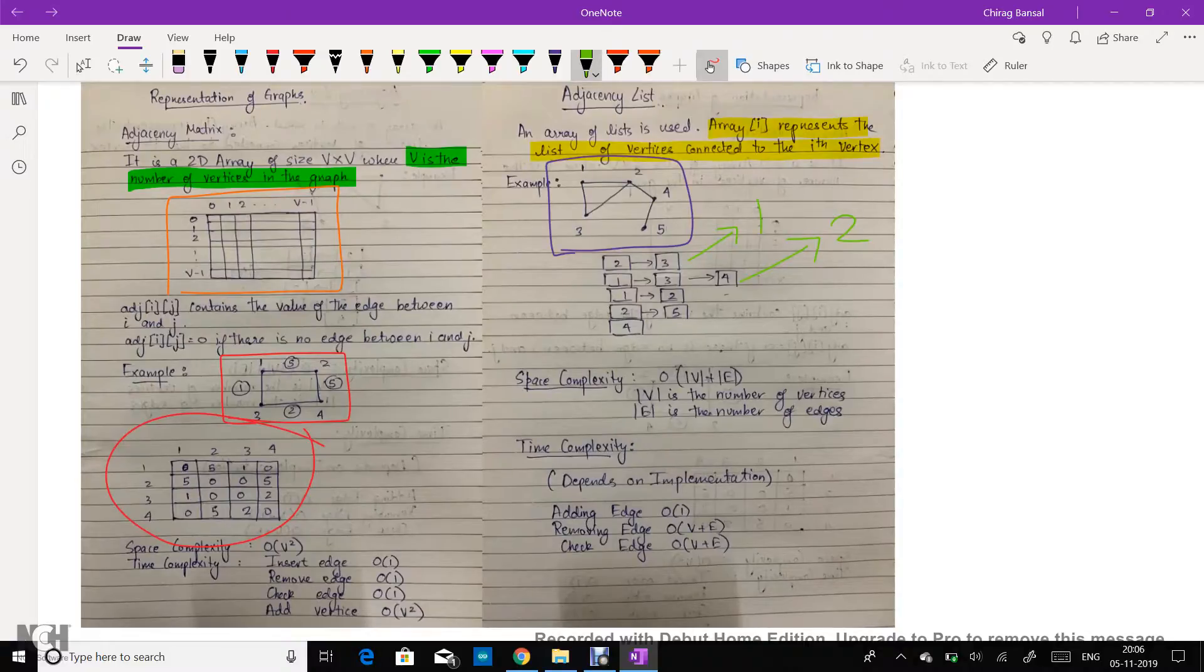The space complexity is order v plus e, where v is the number of vertices and e is the number of edges. As we store v number of lists and each list contains order e elements. Therefore space complexity is order v plus e.